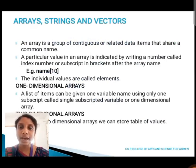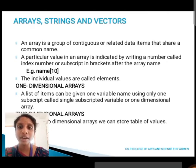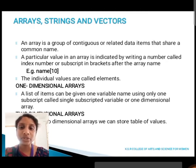First we are going to discuss about arrays and strings and vectors. What is meant by array? An array is a group of continuous or related data items that shares a common name. A particular value in an array is identified by writing a number called index number or subscript in a bracket after the array name. The individual values are called elements. Arrays are classified into two types: one-dimensional array and two-dimensional array. A list of items given one name using only one subscript is called a single subscript variable or one-dimensional array.